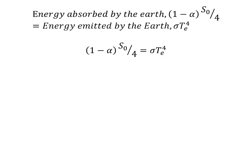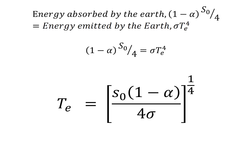We can now start to construct our model: the amount of energy absorbed equals the amount of energy emitted. That gives us a simple algebraic equation containing things we know — the solar flux, an estimate of the albedo, and the Stefan-Boltzmann constant — and one unknown: the temperature of the Earth. We can rearrange that equation to solve for temperature. We now have an equation that describes the temperature of the Earth.